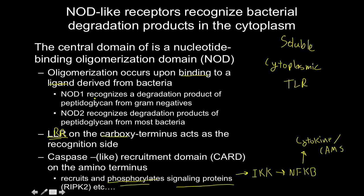The two types of NOD-like receptors are NOD1 and NOD2, but the textbook doesn't give a whole lot of specificity about the differences between them. For the purposes of this, I like to think of them as structurally and functionally very similar.